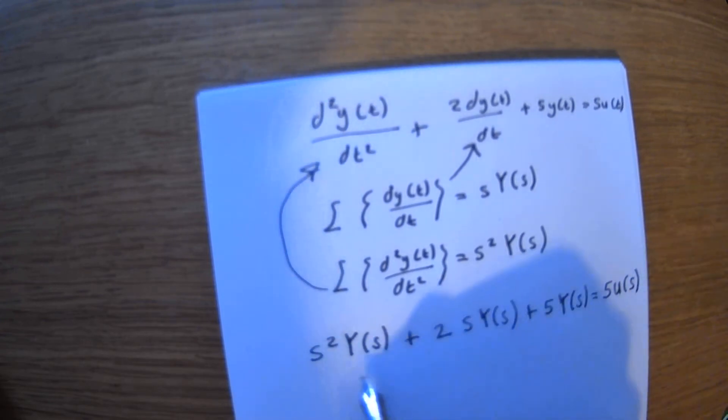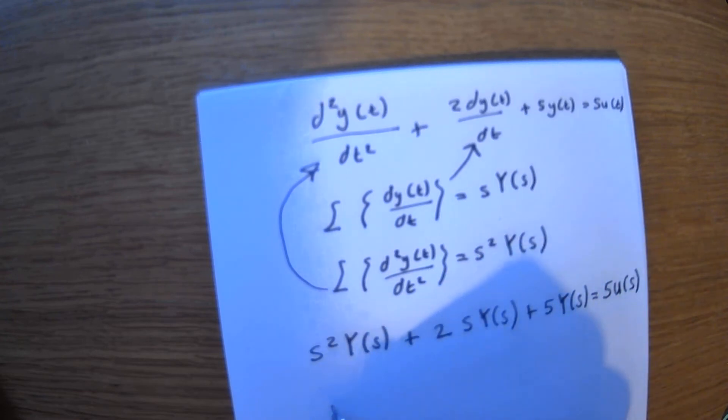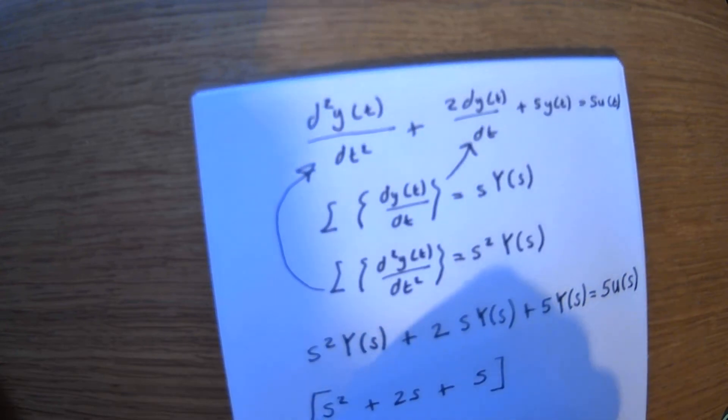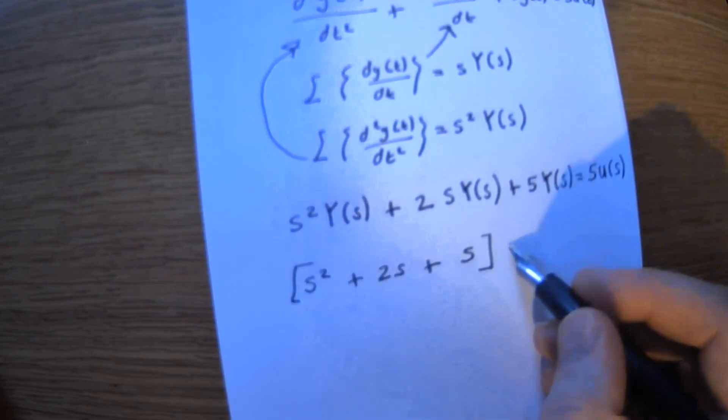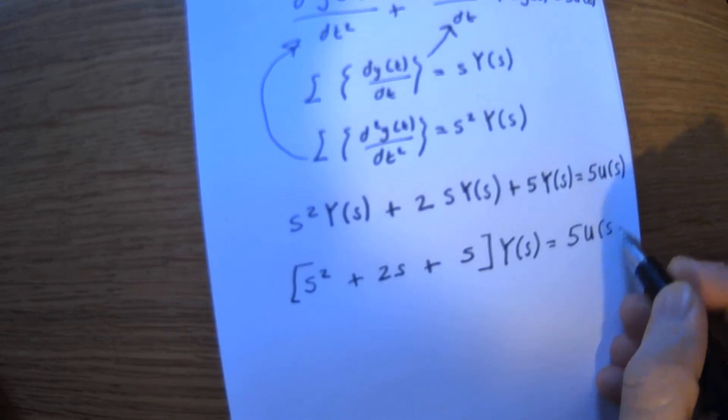So then if I'm looking at - you can see common - the Y of s is all common to all, so I can just simplify it. So Y squared plus two s plus five in square brackets, and put Y of s because that's what's common, equal to five capital U of s.